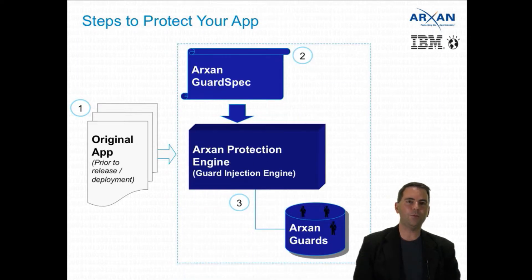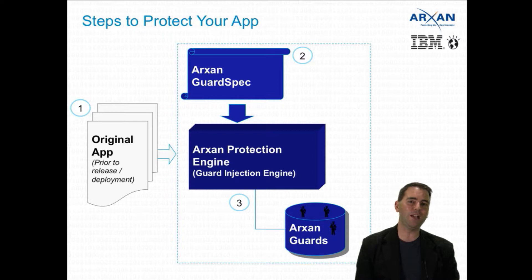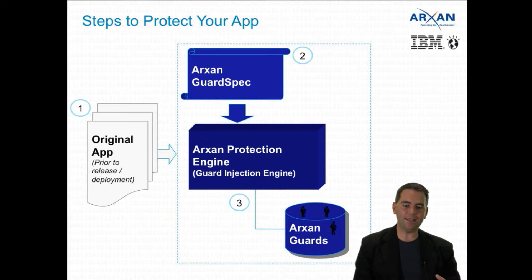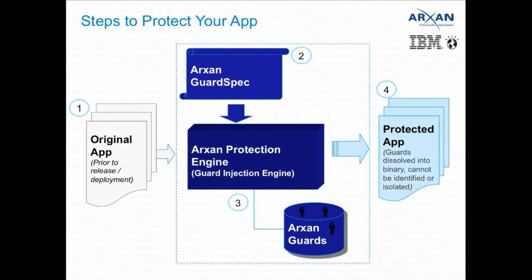In step two, we specify something called an ArcSan guard spec, which protects the actual application itself. This describes the different types of guards which you're going to inject into your final binary. It's done one time, it's customized for the solution, and it's done with the assistance of a subject matter expert who understands the intimate details of that application. In step three, we feed both the original final compiled app and the guard spec into the ArcSan engine, which then injects these tiny pieces of code into the final binary. In step four, the engine writes out the final hardened application, which can prevent reverse engineering, or make it very difficult, as well as detect runtime modification or injection.